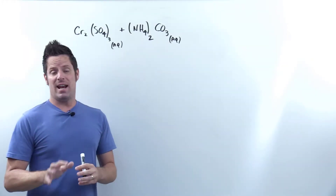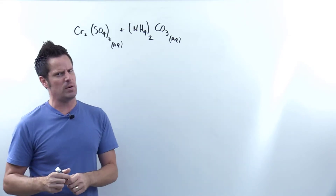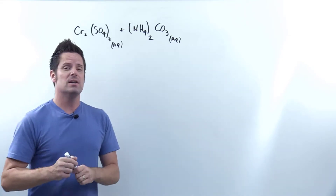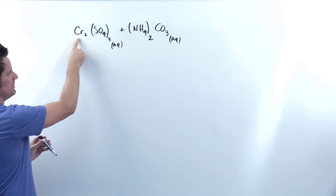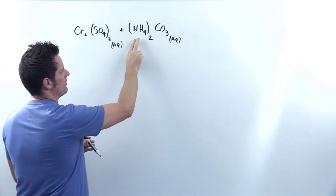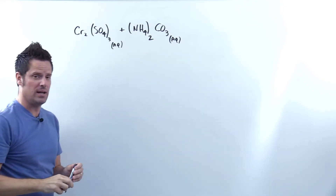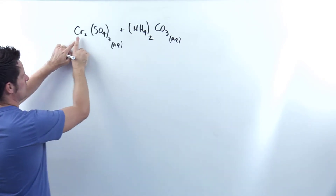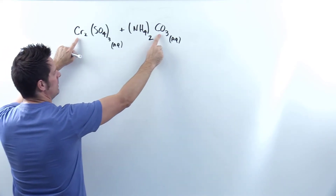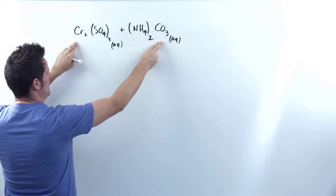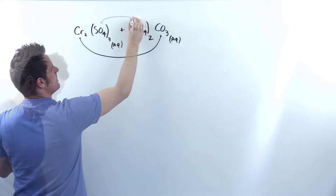To write out a balanced net ionic equation, you have to go through the steps outlined in earlier videos linked in the description below. Step one is the partner swap. In the compound on the left, chromium is stuck to sulfate. On the right, ammonium NH4 is stuck to carbonate CO3. What we do is trade partners — chromium ends up going with carbonate, and NH4 goes with sulfate.